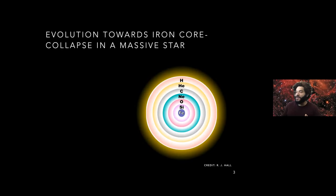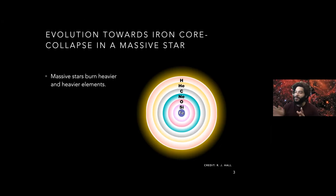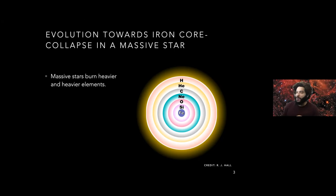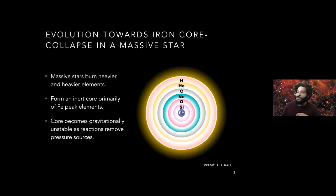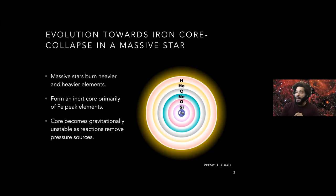How do you explode a star? The standard picture is that massive stars will burn heavier and heavier elements, like an onion model — perhaps overly simplistic, but a useful illustration of the evolutionary pathway. The heaviest nuclei sit in the center, with the ashes of subsequent burning stages in shells above, eventually forming an iron core. That iron core is inert because you can no longer fuse heavier elements, so once it reaches a critical mass it becomes gravitationally unstable as pressure sources are removed, and the core collapses rapidly.